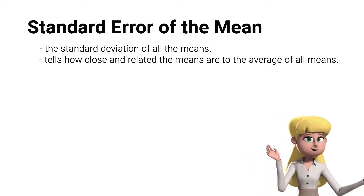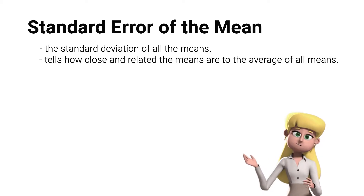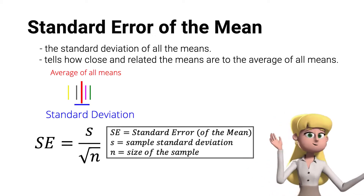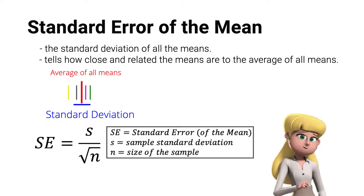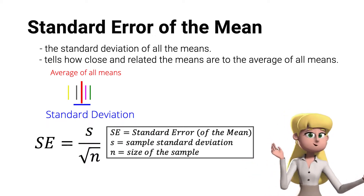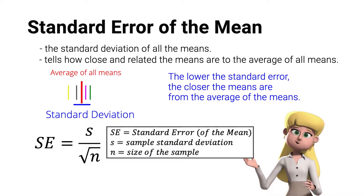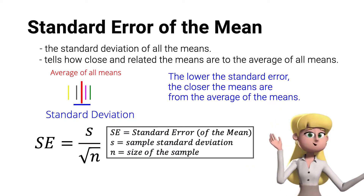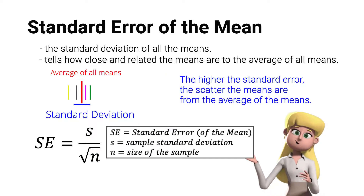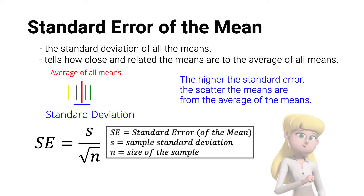Finally, from a set of measurements, if we add more sets of measurements — implying multiple means — the standard error of the mean is the standard deviation of all the means. It tells how close and related the means are to the average of all means. The lower the standard error, the closer the means are from the average of the means; the higher the standard error, the more scattered the means are from the average of all means.